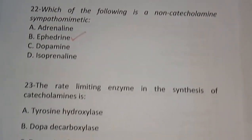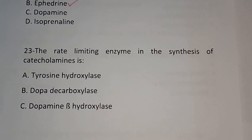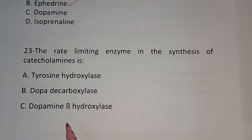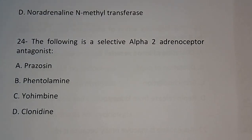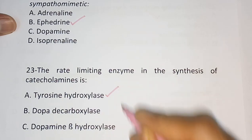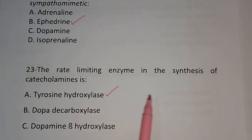Question number 23: The rate-limiting enzyme in the synthesis of catecholamine is — Tyrosine hydroxylase, Dopa decarboxylase, Dopamine beta hydroxylase, Noradrenaline N-methyl transferase. The correct answer is: Tyrosine hydroxylase — the rate-limiting enzyme in the synthesis of catecholamine.